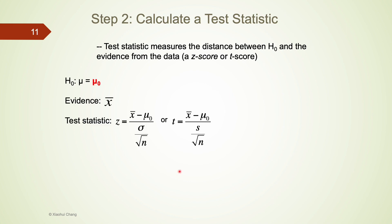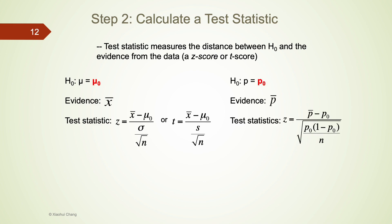Step 2 is to compute a test statistic, which measures the distance between the null and the evidence from the data. For numerical data, hypothesis tests are mostly about population means, mu. The evidence will be the sample mean from the data, that's x-bar. The test statistic could be either a z-score or a t-score. It will be a z-score if the population standard deviation sigma is given to us, and a t-score if sigma is not given but we have sample standard deviation s. For categorical data, tests are about population proportions p. The evidence from the data is sample proportion p-bar, and the test statistic is always a z-score.